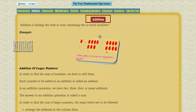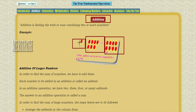Let us take an example. There is one coin here and seven coins. When we add this one coin and seven coins, we will be getting eight coins. Let us count: one, two, three, four, five, six, seven, eight. So we have eight coins together.